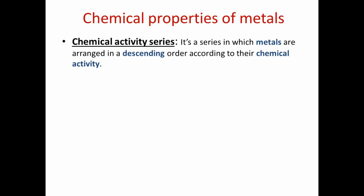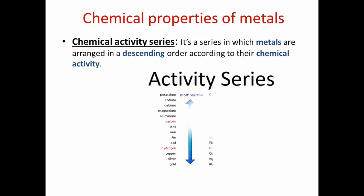Chemical properties of metals: metals are arranged according to their chemical activity during chemical reactions in a series called the chemical activity series. The chemical activity series is a series in which metals are arranged in descending order according to their chemical activity. We can observe that potassium is located at the top, which means it is more active than sodium, which is more active than calcium, which is more active than magnesium, and so on.